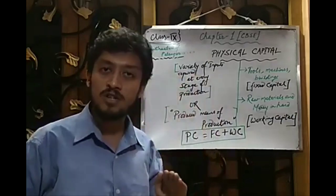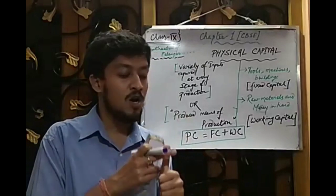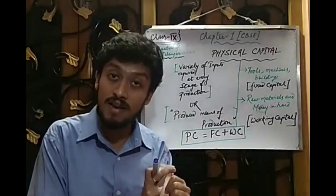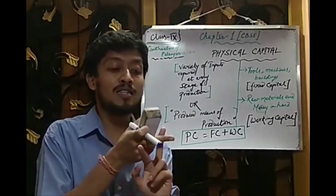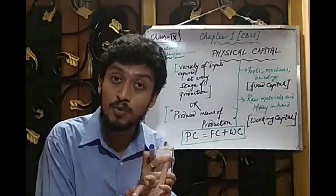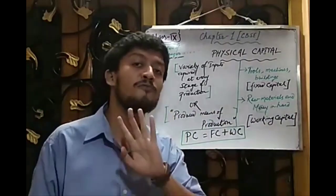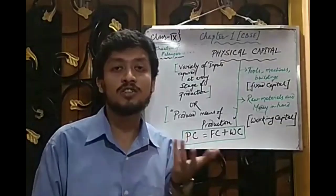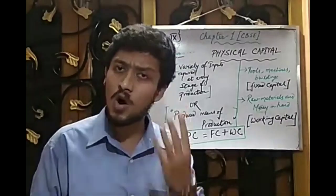We are still continuing the Palampur chapter. We have read the basics of our first chapter — what is Palampur, where it is located, how it is connected with many other places, what transportation facility Palampur has, what different trades Palampur does, and what the education system of Palampur is. We also read that there are four factors of production. Whenever a producer wants to produce an output, it requires four factors of production: land, labour, capital, and entrepreneur.